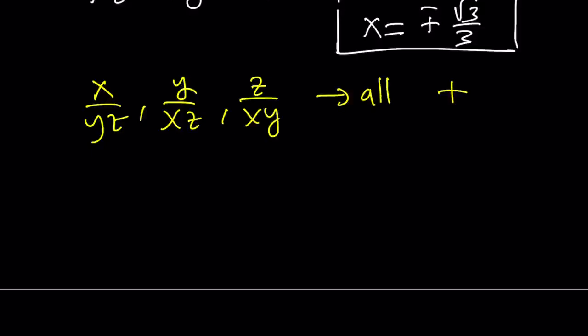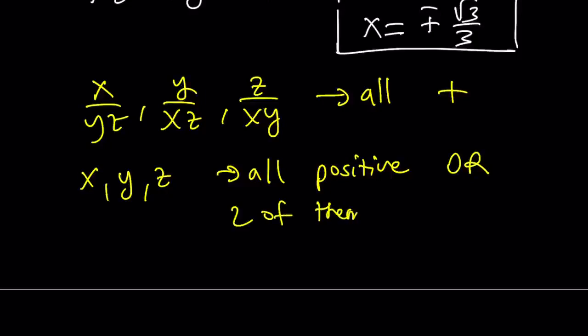Which means that X, Y, Z can all be positive, right? X, Y, Z can be all positive. Or, or, two of them will be negative. And one of them will be positive. Because that's also going to give you a positive quotient, right?